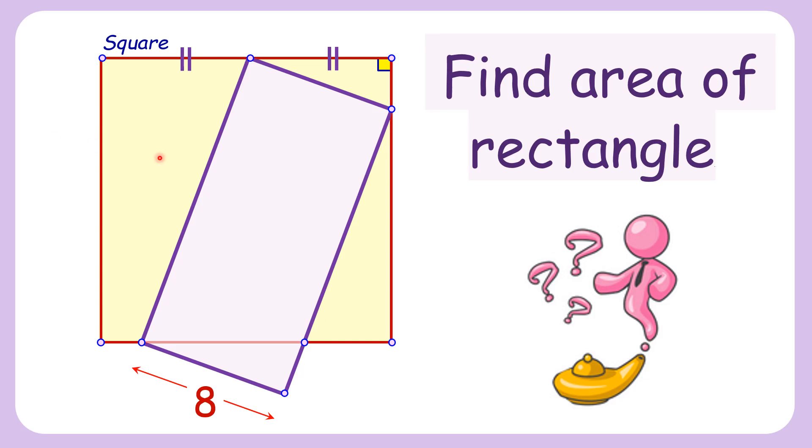In this interesting question, a yellow square and a pink rectangle are given such that three vertices of the rectangle are lying on the sides of the square, and one vertex is lying at the midpoint of the side of the square. The length of the rectangle is given as 8 centimeters. Using this limited data, we have to find the area of the rectangle. We'll solve this question by two methods. The first approach will be a logical approach.